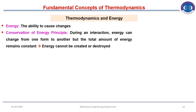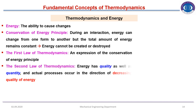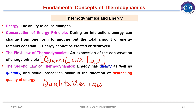Thermodynamics and energy — basic definitions: energy is the ability to cause change. Conservation of energy principle: during an interaction, energy can change from one form to another but the total amount remains constant; energy cannot be created or destroyed. The first law of thermodynamics is an expression of conservation of energy — energy can neither be created nor destroyed but can change form. The second law states that energy has qualitative as well as quantitative aspects, and actual processes occur in the direction of decreasing quality of energy. The first law is the quantitative law and the second law is the qualitative law.